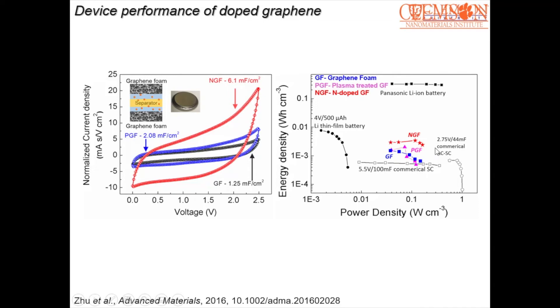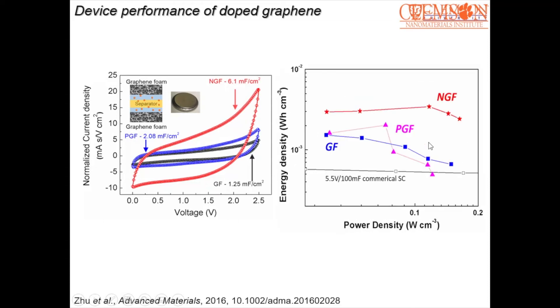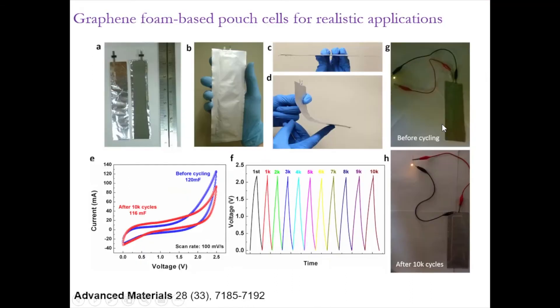And it has pretty much a flat line here when you look at the power density. That is, it can provide much higher capacitance than the commercial 100 mF supercapacitor that you can see here. So we were also able to translate this into large pouch cells that are flexible and that can be run for 10,000 cycles. So you can see how thin this pouch cell is and it contains graphene foam.